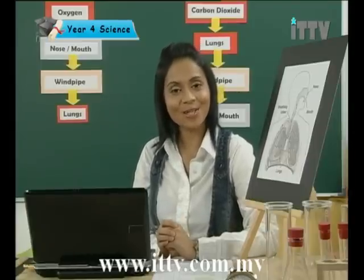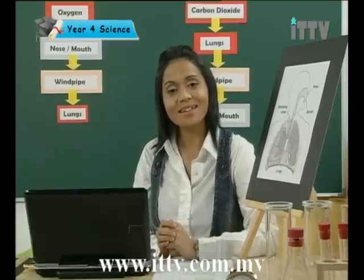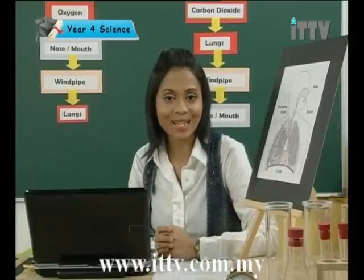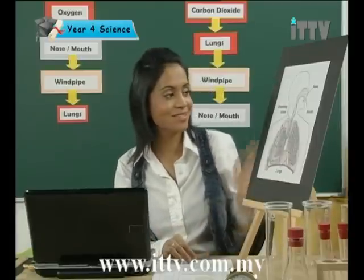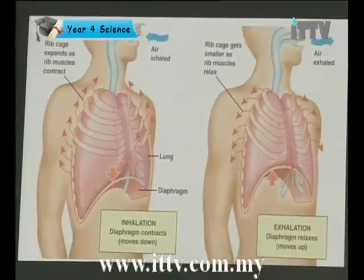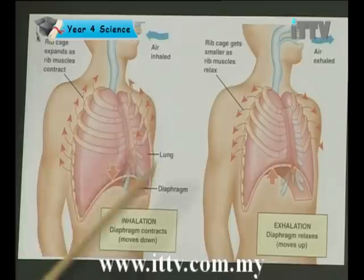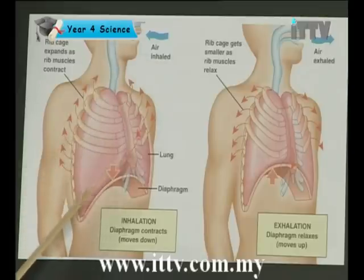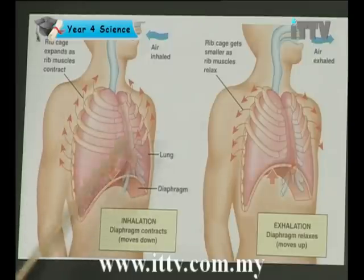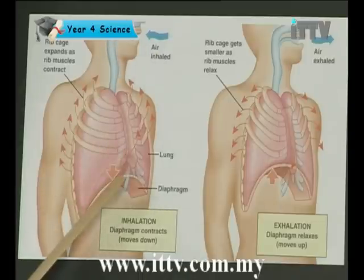Try it at home — inhale and exhale. What happens while you inhale and exhale? During inhalation your lungs expand so that the air from outside can enter into your lungs. The diaphragm contracts and flattens while your ribs move up. This facilitates the air from outside to enter into your lungs. The inhaled air is full of oxygen.